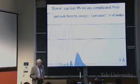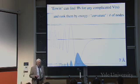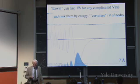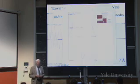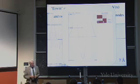With the Erwin program we can find satisfactory wave functions for any complicated potential — we can find allowed energies, shapes of wave functions, probability density, rates of tunneling, and all this kind of stuff. We can rank all the wave functions by their energy or curvature — the number of nodes they have. Here's an unsatisfactory wave function. What do you notice that's bad about it?